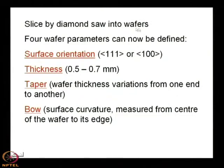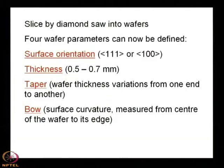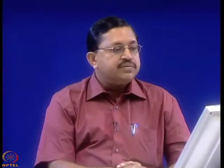There are four wafer parameters. The first is surface orientation — whether it is (100), (111), or another direction. The second is thickness, which can be 0.5 to 0.7 mm. If the diameter is large, the thickness will also be larger, because there must be a proportion between diameter and thickness; otherwise mechanical strength will not be adequate.